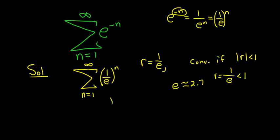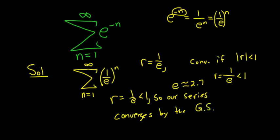So in this case, r is equal to 1 over e, and it's less than 1. So our series converges by the, and I'll abbreviate it, geometric series test. Hope that made sense.